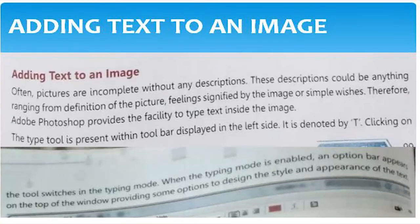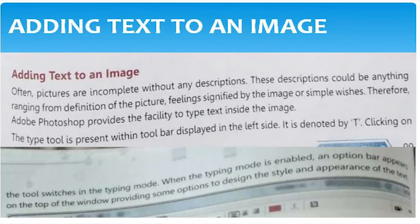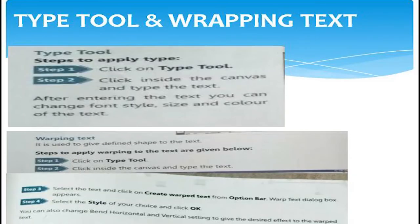Clicking on the tool switches to typing mode. When typing mode is enabled, an option bar appears at the top of the window providing some options for design, style, and appearance of the text. By using the text tool we can write text on an image.